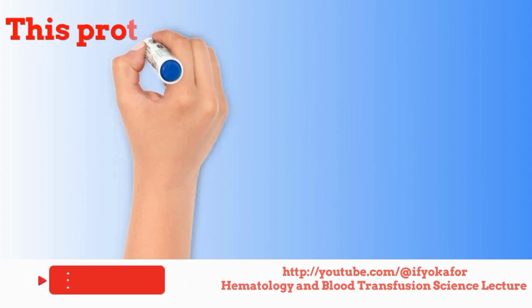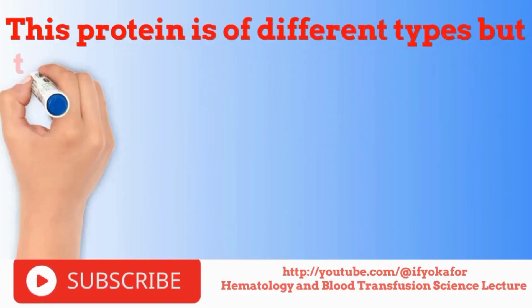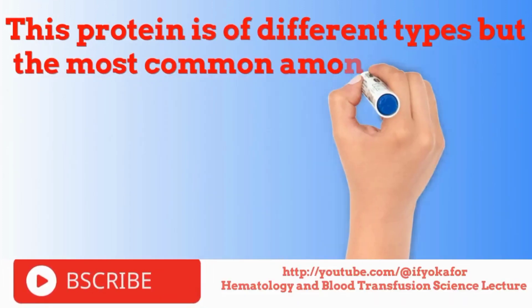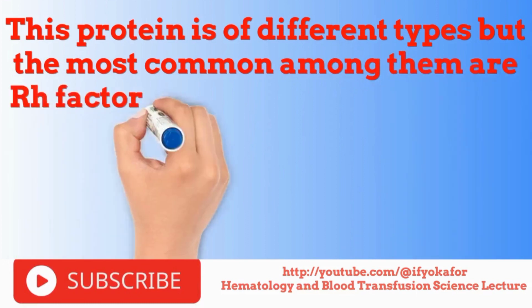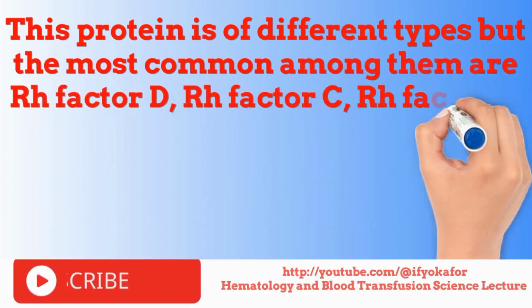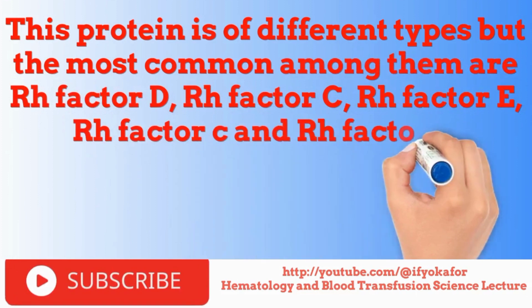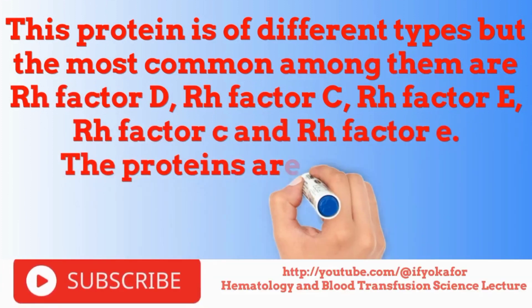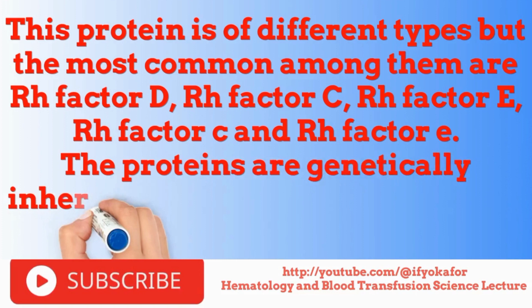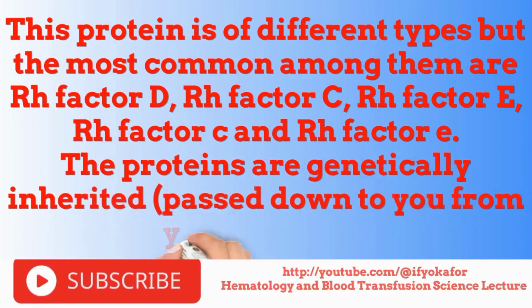This protein is of different types, but the most common among them are ROH Factor D, ROH Factor C, ROH Factor E, ROH Factor C, and ROH Factor E. The proteins are genetically inherited, that is, passed down to you from your parents.